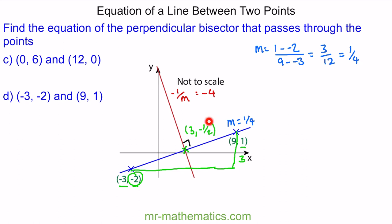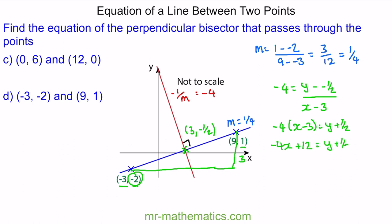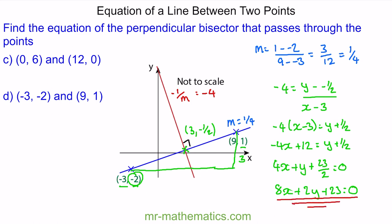Now we know the red line passes through the point (3, -1/2). So negative 4 is equal to y minus negative one half, over x minus 3. I'll rearrange this equation into the form of a straight line, expand the brackets, and make the equation equal to zero. Finally, I'm going to multiply every term by 2 to cancel the denominator. So 8x + 2y + 23 = 0, and this is the equation of the red perpendicular bisector.